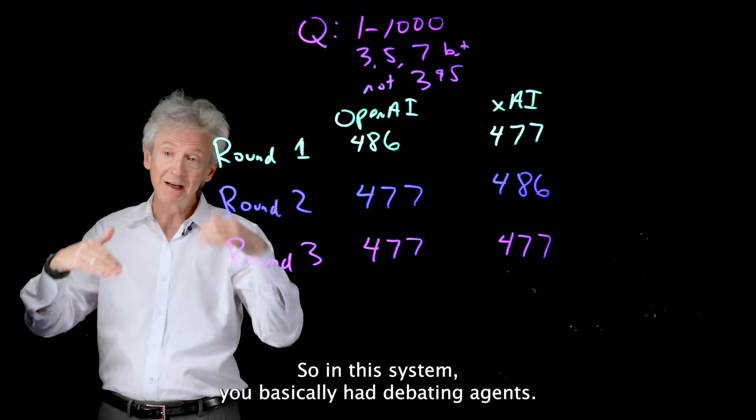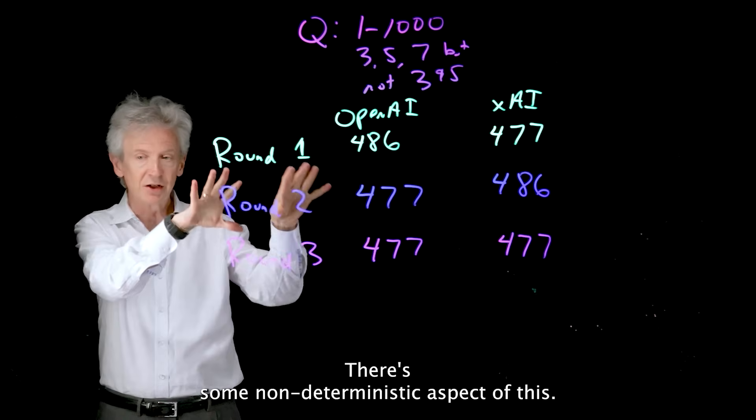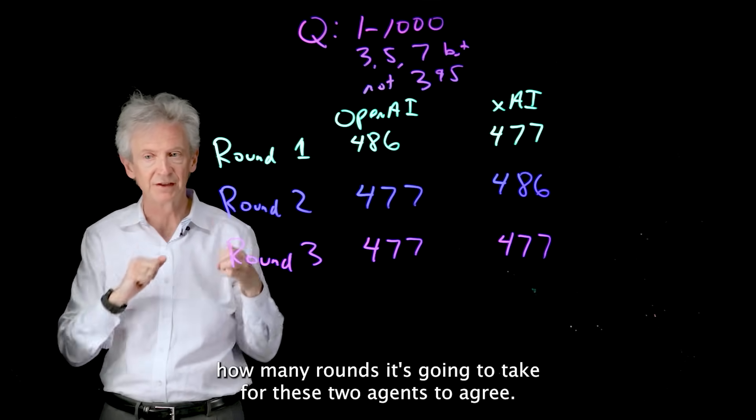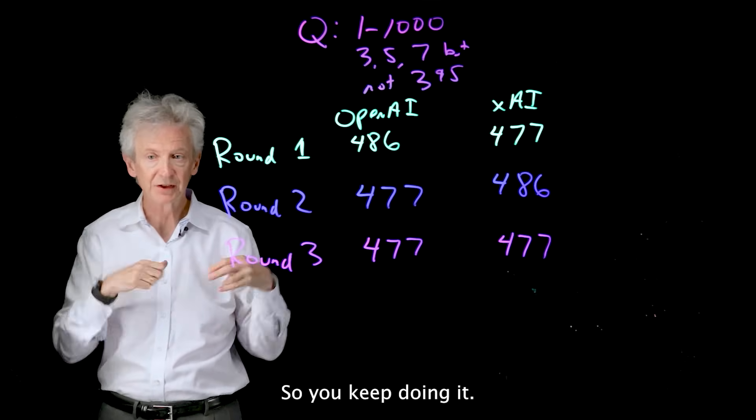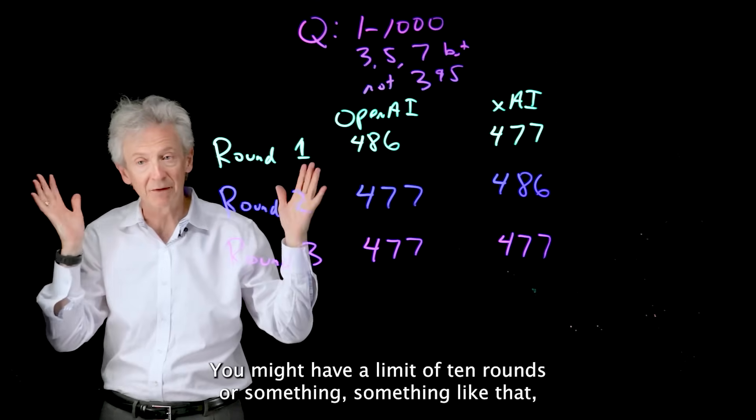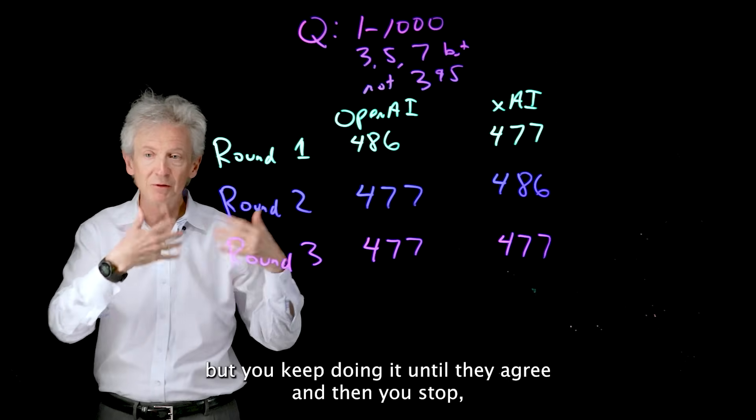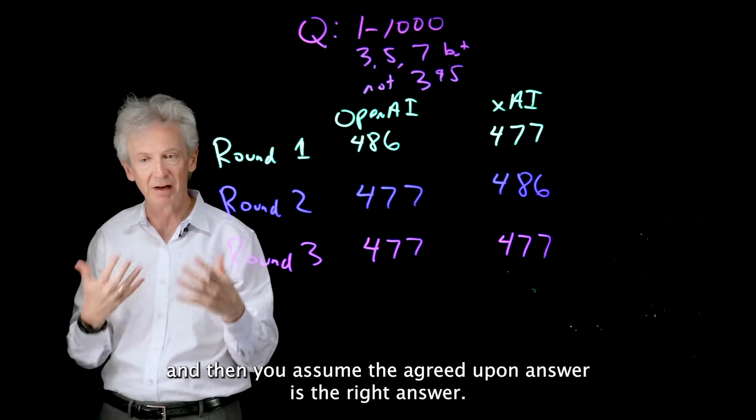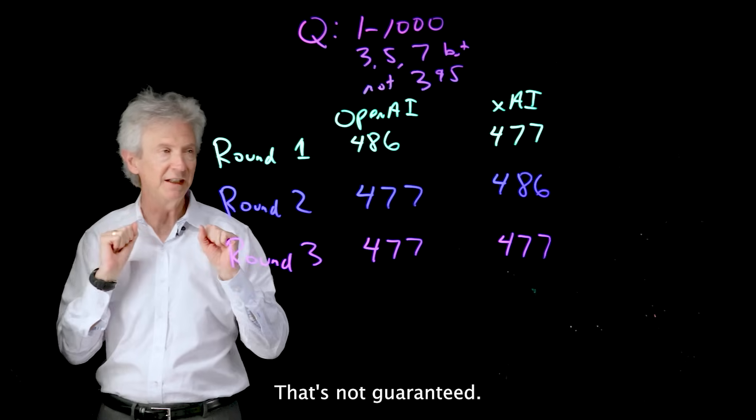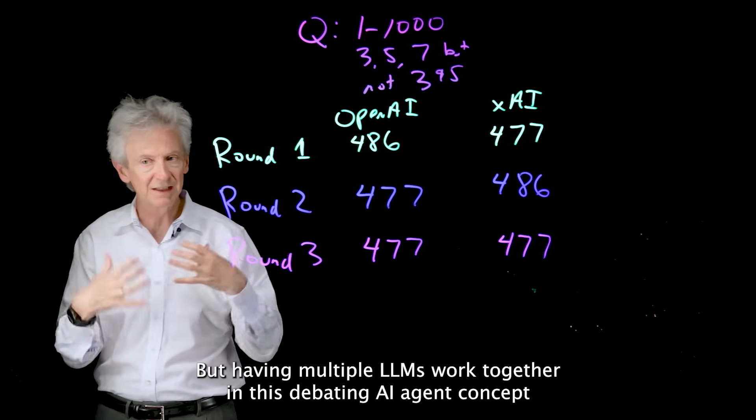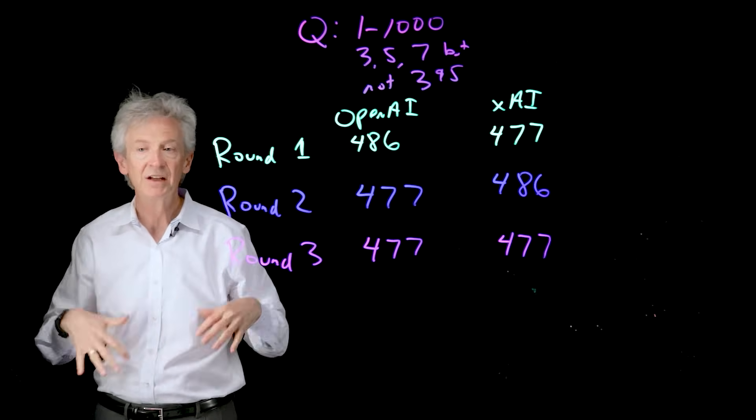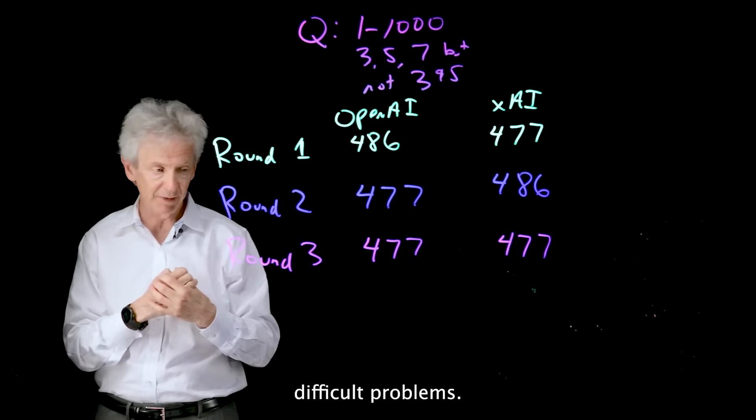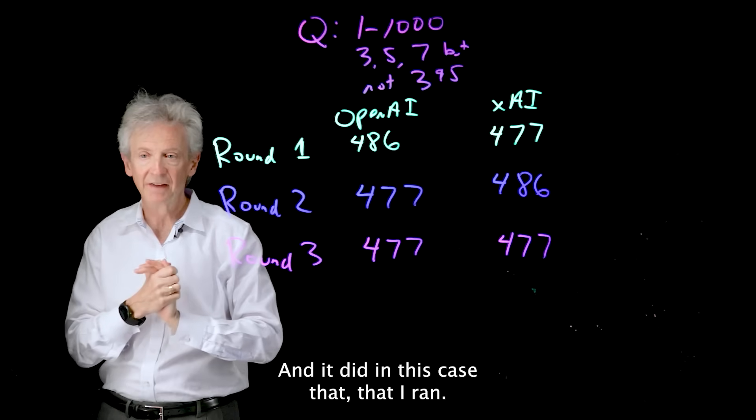So in this system, you basically had debating agents. There's some non-deterministic aspect of this. You don't really know how many rounds it's going to take for these two agents to agree. So you keep doing it. You might have a limit of 10 rounds or something. But you keep doing it until they agree. And then you stop. And then you assume the agreed upon answer is the right answer. That's not guaranteed. But having multiple LLMs work together in this debating AI agent concept does significantly improve the accuracy with some of these difficult problems. And it did in this case that I ran.